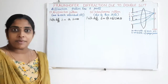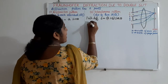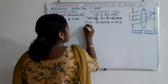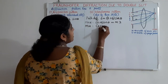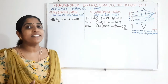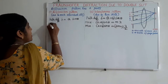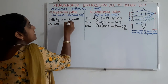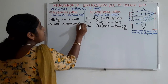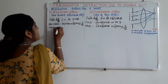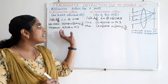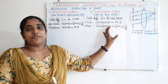So the path difference due to diffraction at a single slit is A sin theta, and the path difference due to the double slit is (A + B) sin theta. The condition for maximum in the interference pattern is that this path difference must be an integer multiple of lambda. For secondary maximum in single slit diffraction, A sin theta equals (2m+1) lambda/2, and for minimum, A sin theta equals m lambda. The final diffraction pattern is the resultant of these two.